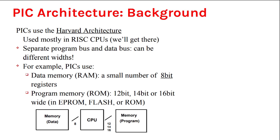In Harvard architecture, the CPU is connected to program memory by a different bus and data memory by a different bus. Since they are separate, they can have different bus widths — program memory can have 12-bit, 14-bit, or 16-bit bus width, while data memory has 8-bit width. So it can simultaneously fetch program data as well as data memory. PIC uses the Harvard architecture and also uses the RISC architecture.